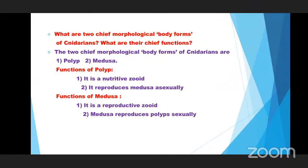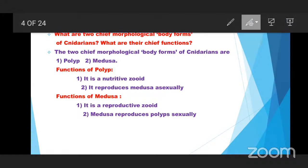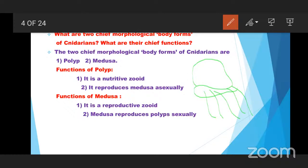Next question: What are the two chief morphological body forms of Cnidarians and what are their chief functions? The two chief morphological body forms of Cnidarians are the polypoid form and the Medusa form. We already know about the Cnidarian body — two types of body forms: polypoid and Medusa forms.